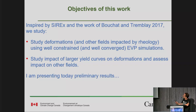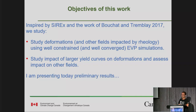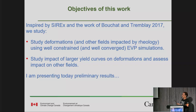So the objectives of this work — inspired by CIREX and also the work of Amélie Bouchard and Bruno Tremblay 2017 — are to study deformations as done in CIREX, but using well-constrained and well-converged EVP solutions, focusing on one rheology. We also want to look at other fields impacted by sea ice rheology: if we're improving deformations, are we also improving land fast ice and the sea ice thickness distribution? As opposed to CIREX, we're concentrating on yield curves that are larger than the standard one, because other studies have shown that a larger yield curve is beneficial, for example for land fast ice. Today I'm presenting preliminary results — this is work in progress.